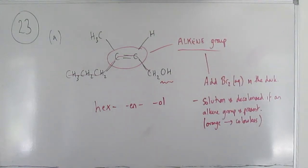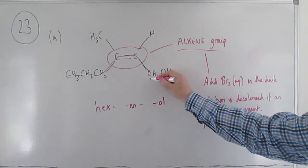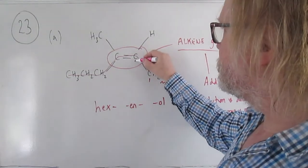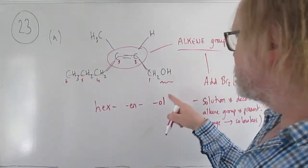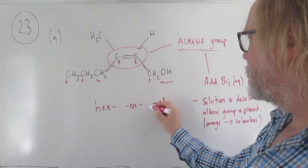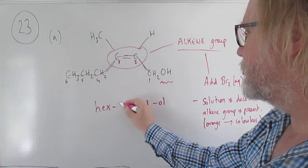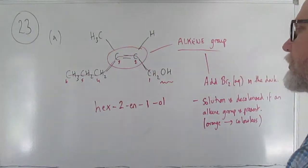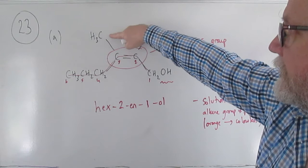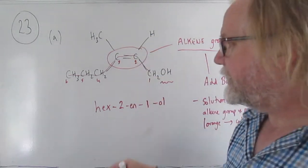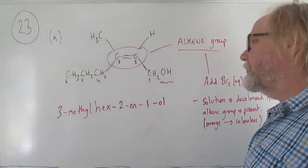Because we're putting '-ol' at the end, we want to keep that number as low as possible, so we call the OH carbon number 1. The alcohol group is on carbon 1 — so it's 1-ol — and the alkene group is between carbons 2 and 3, quoting the lower number, so it's hex-2-en-1-ol. The methyl group is attached to carbon 3, so it's 3-methyl-hex-2-en-1-ol.